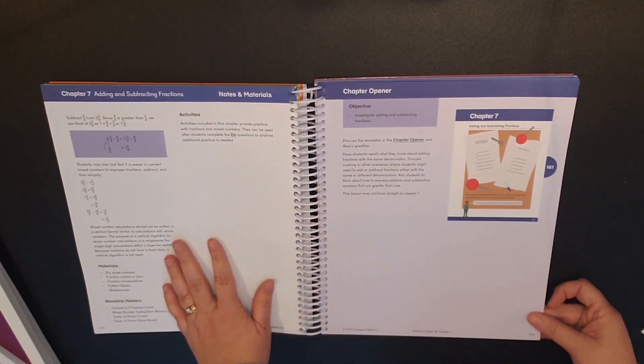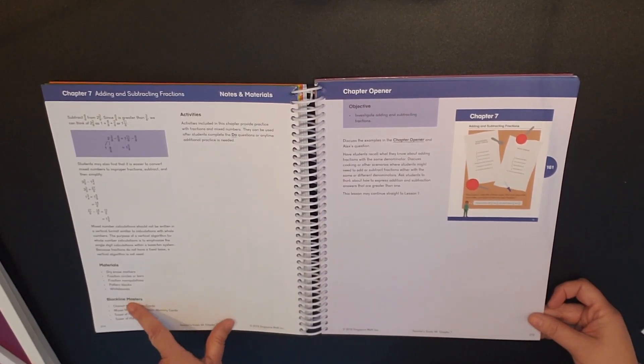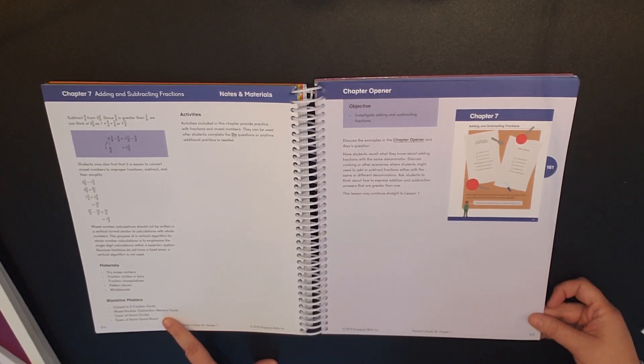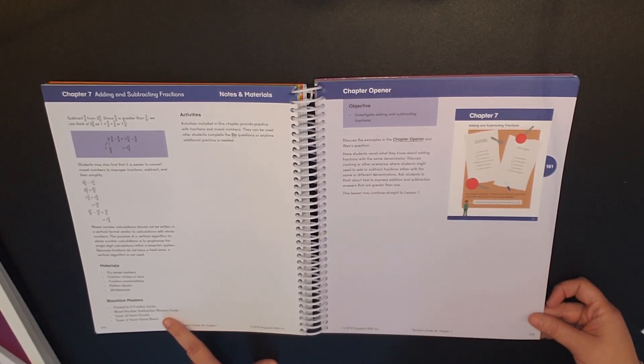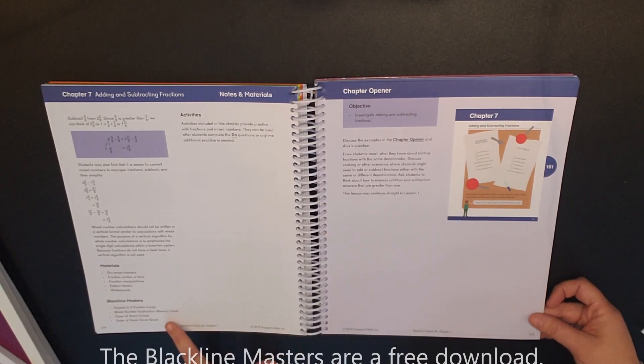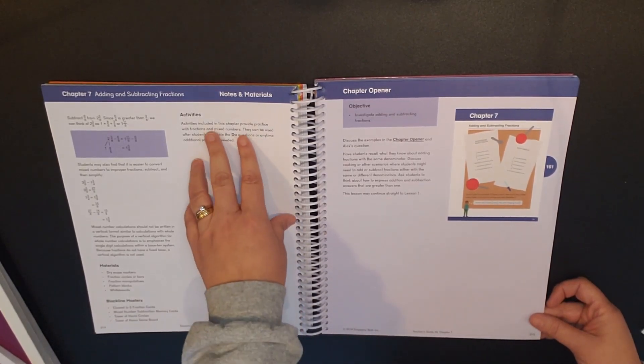And then it talks about subtracting the mixed numbers and some of the materials that you'll need and then the black line masters. These black line masters are found on the Singapore website under the dimensions section and so these are downloads.